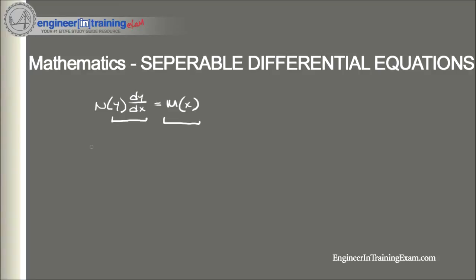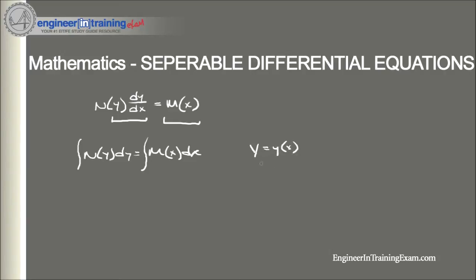The process of solving separable differential equations is fairly easy. The first thing we need to do is rewrite the equation in the form N(y) dy = M(x) dx, and then take the integral of both sides. After integrating, we hopefully will have an implicit solution that we can then solve for the explicit solution y(x). Recall that the implicit solution is not written in the form y = y(x), while the explicit solution has been written in that form.